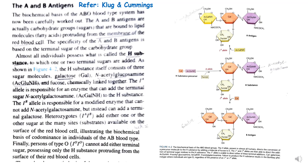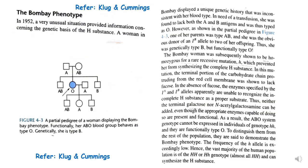Now we will discuss the last special kind of blood group: the Bombay phenotype. This unusual situation provided information concerning the genetic basis of the H substance we just discussed. In Bombay, a woman displayed a unique genetic history inconsistent with her blood type. She was in need of transfusion, and when her blood was tested, she had no A or B antigen.